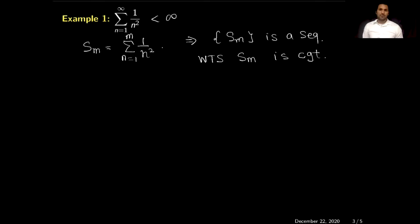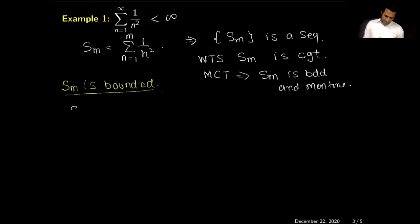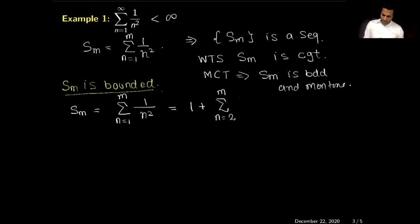In this example, we will use the Monotone Convergence Theorem to prove the sequence is convergent. By that theorem, we need to show S_m is bounded and monotone. I will split out the first term and start the remaining summation from n=2 to m — I will explain why in a moment.